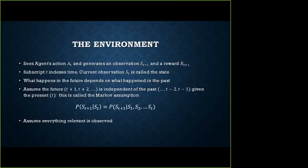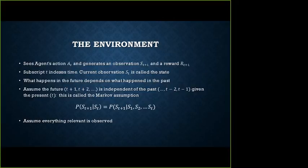What happens in the future typically depends on what happened in the past, but one simplifying assumption many applications make is that the future is independent of the past given the present — you've seen this in many other machine learning models. It's called the Markov assumption: the conditional probability of the next state given the current state is independent of the previous T-1 states. We'll also assume everything relevant to taking an action and getting the feedback signal is observed. There are variants called partially observed settings, where you only get partial observation — for example, just the X coordinate rather than X and Y.